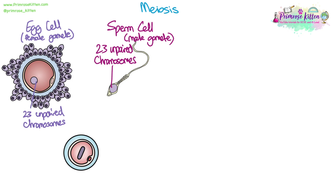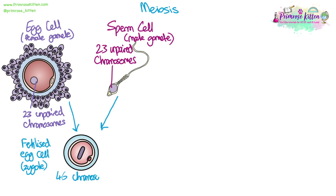In meiosis we are looking at the production of gametes. We're going to use human gametes as an example here. We have our egg cell which is our female gamete and our sperm cell which is our male gamete. Both of them contain 23 unpaired chromosomes in their nucleus. When they fuse together during fertilisation they form a fertilised egg cell which then becomes a zygote. When the nuclei fuse together we get 46 chromosomes or 23 pairs.